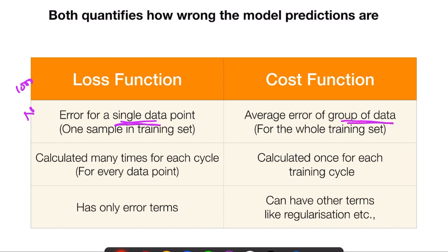The cost value is the average losses across the whole thousand samples — that is what the cost function is. For every training cycle and every example, we calculate one loss value.